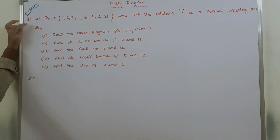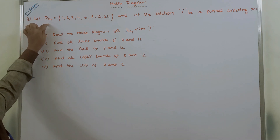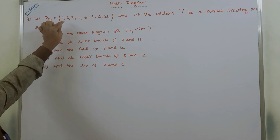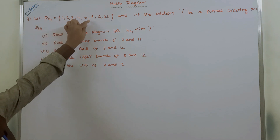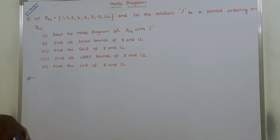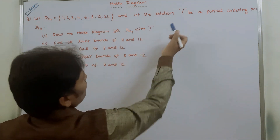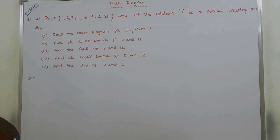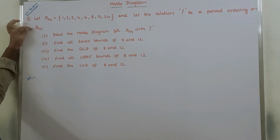The given problem is: let D24, that means divisors of 24, be the set {1, 2, 3, 4, 6, 8, 12, 24}, and let the relation be a divisibility relation, which is a partial ordering on D24.